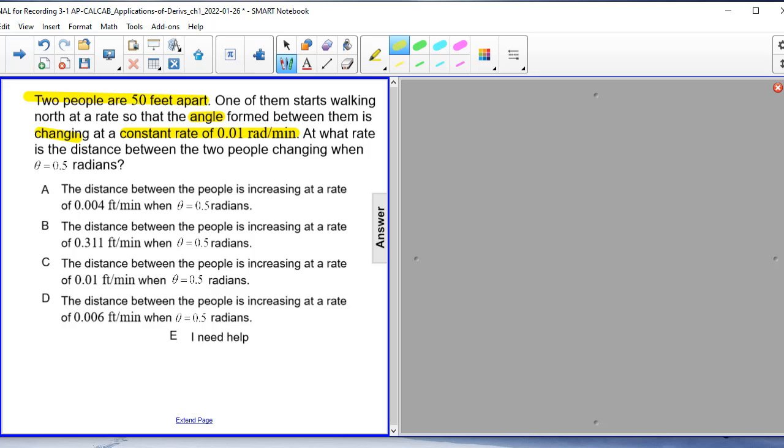What we're looking for is when the rate is changing between the two people, that's going to be dr dt. At the moment, theta is equal to half a radian. 0.5 is a half, I assume you know that.